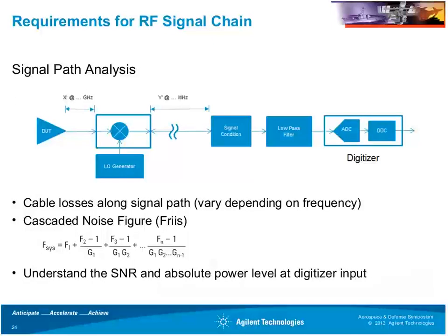The RF signal chain in front of the digitizer is important for understanding measurement accuracy and sensitivity. What's critical to understand is the contribution of the signal chain in terms of noise figure and gain as the signal passes from the antenna into the digitizer. If you've characterized these individual elements in the signal chain, you can calculate the cascaded noise figure using a Friis equation. Knowing this helps you understand what the signal-to-noise ratio and absolute power are at the input ports to the digitizer, informing expected measurement variance.